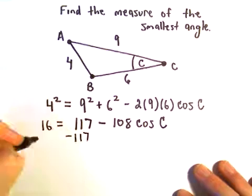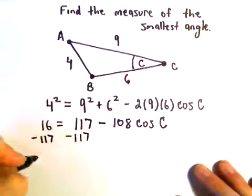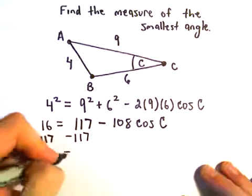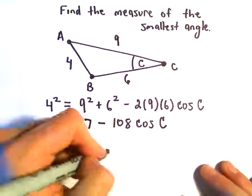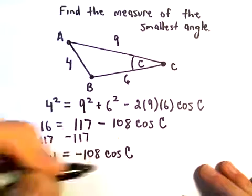We can subtract the 117 from both sides. That's going to leave us with negative 101 on the left equals negative 108 times cosine of C.